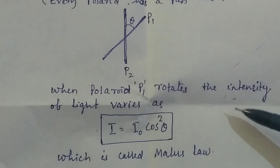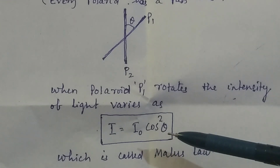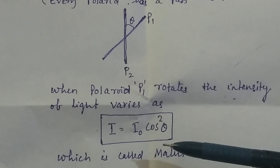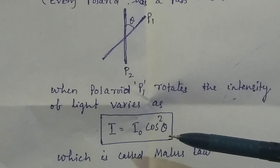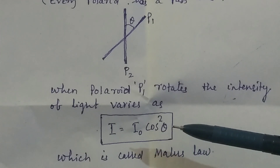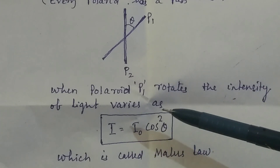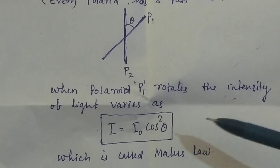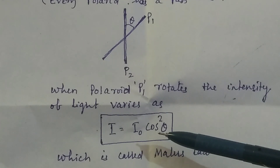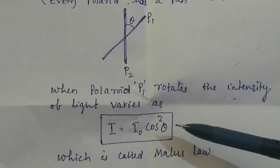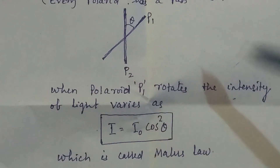The variation of intensity we measure in terms of current, that is the microammeter connected to the photocell or solar cell. From that arrangement, we can measure the current. When polaroid P1 rotates, the intensity of light varies as I = I₀ cos²θ, which is called Malus's law, and we have to prove it from this experiment.